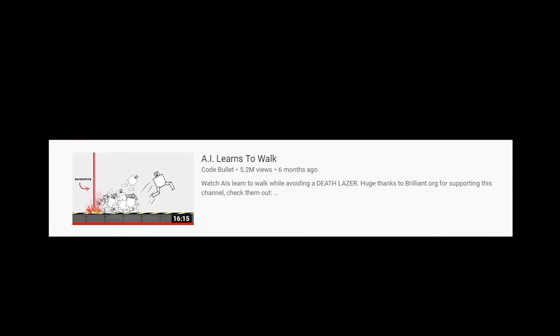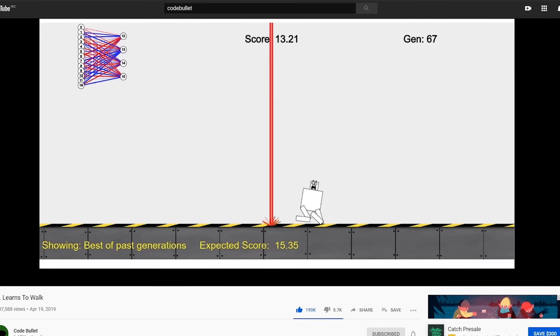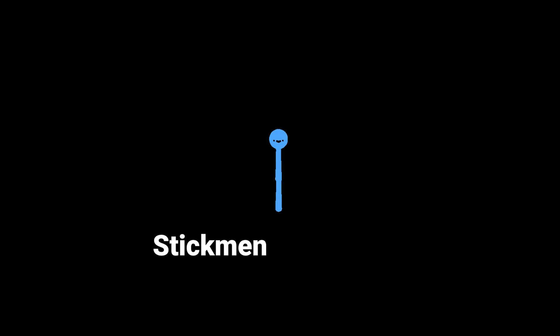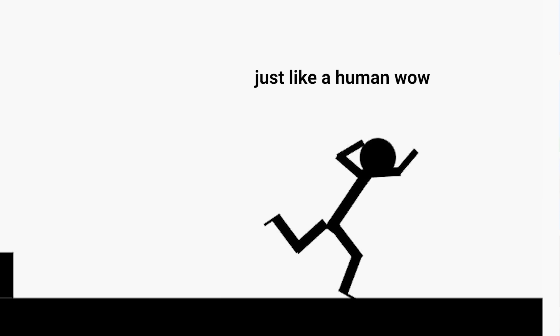So a while ago I saw this really cool video from Code Bullet about an AI learning to walk by itself, which I found super fascinating. Now, I have an obsession with stickman and physics so it got me thinking, would it be possible for an AI stickman to learn to walk or run like a human by itself?